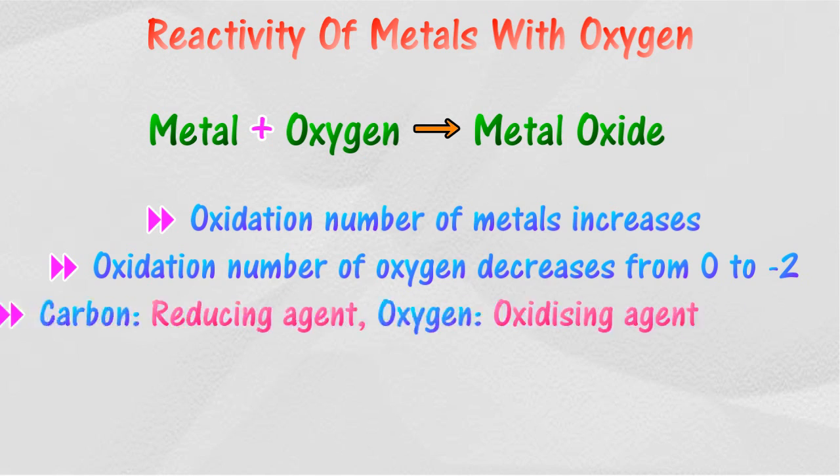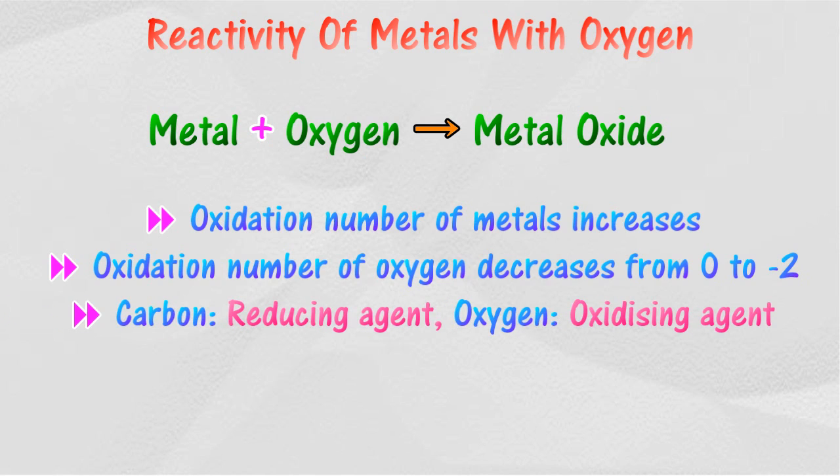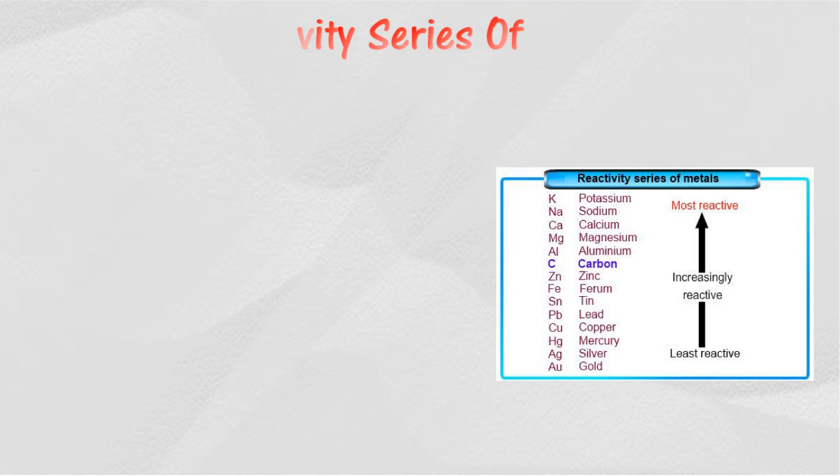Metal acts as a reducing agent and oxygen acts as an oxidizing agent. By comparing the figure of reaction between metal and oxygen, a sequence of the reactivity of metals can be constructed. The sequence of metals is known as the reactivity series of metals.